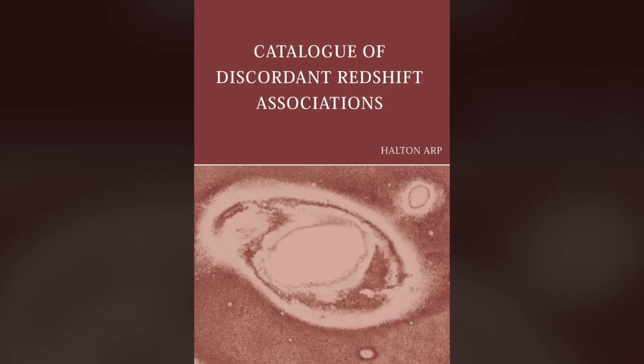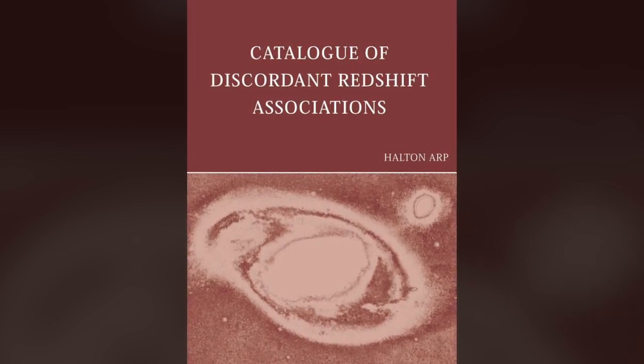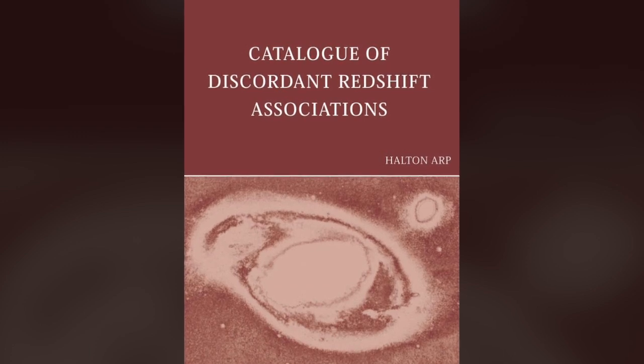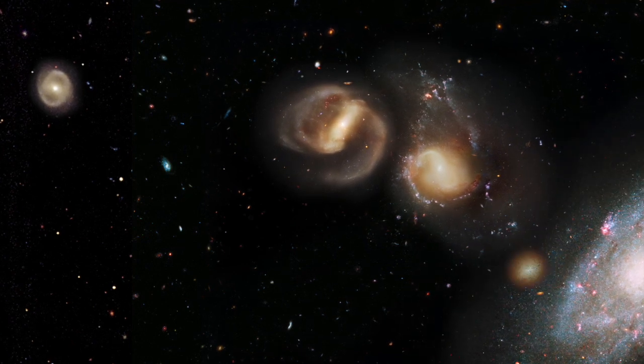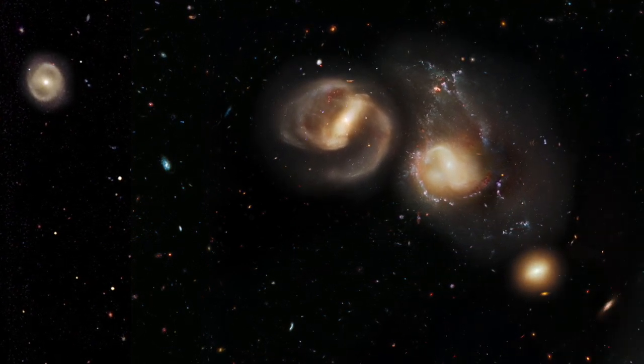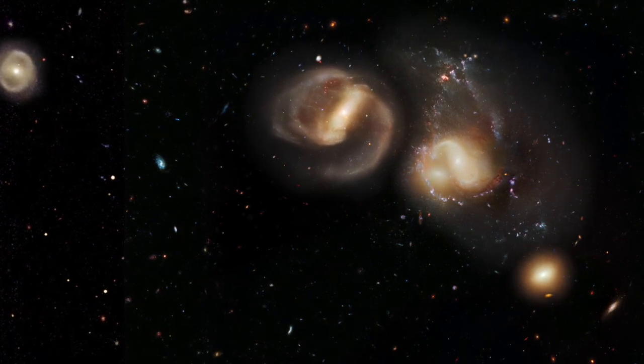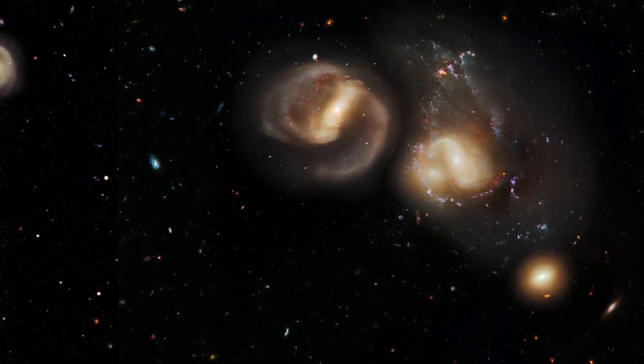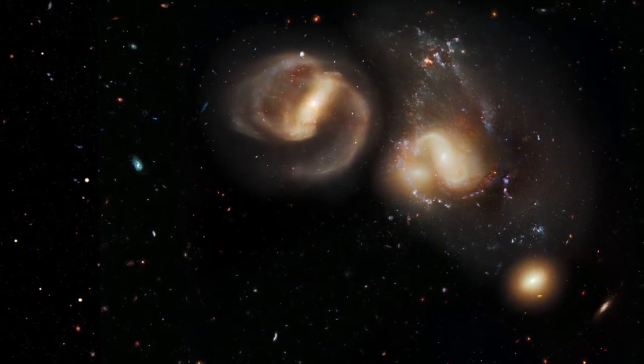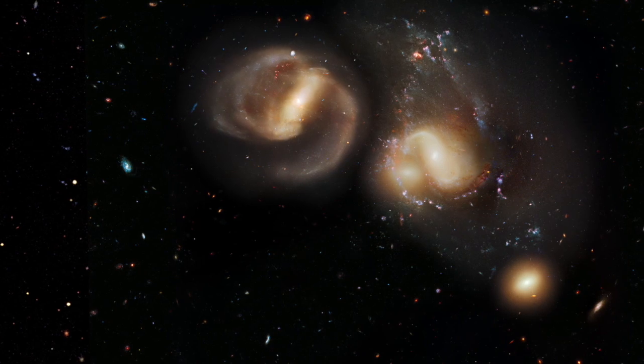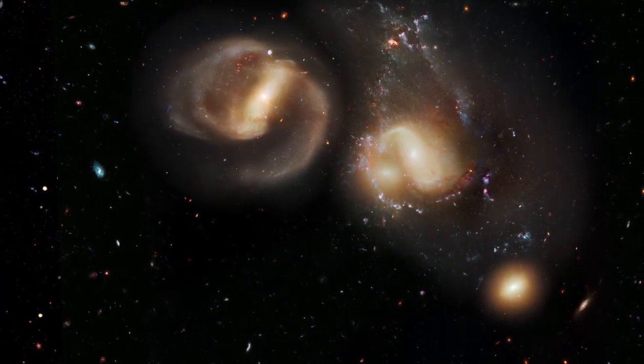This belief in redshift as a cosmic meter stick has been disproved since the 1960s, but facts seldom affect institutionalized belief systems. Unremarked is the fact that the differences in redshift to the background galaxies place them farther from each other than the foreground galaxy is from the Milky Way. Does that make the foreground galaxy a member of our local group? Apparently, the illusion of foreshortening with distance works on beliefs as well.